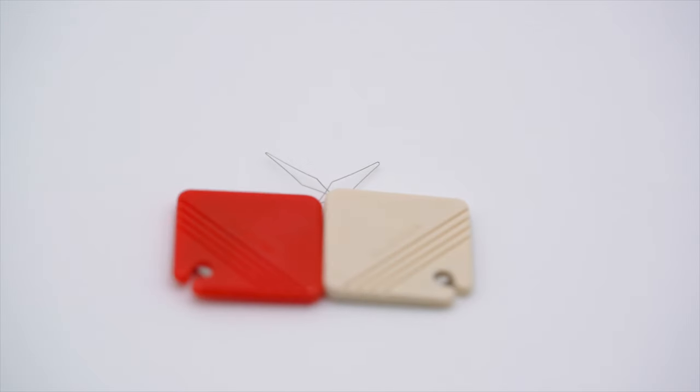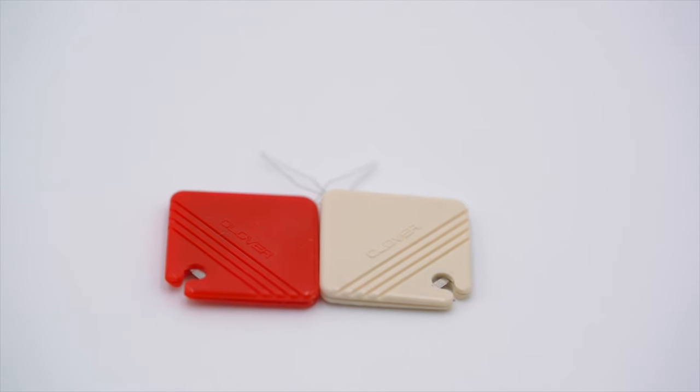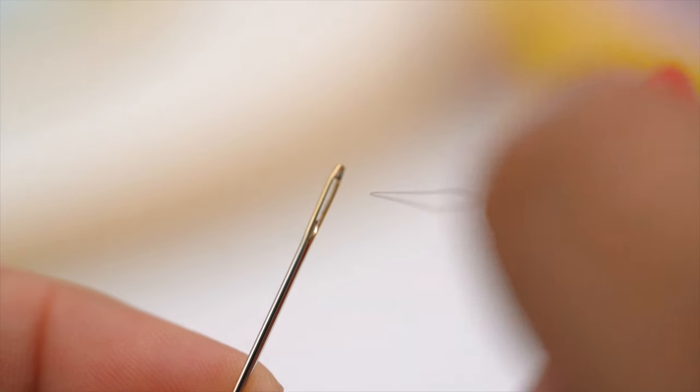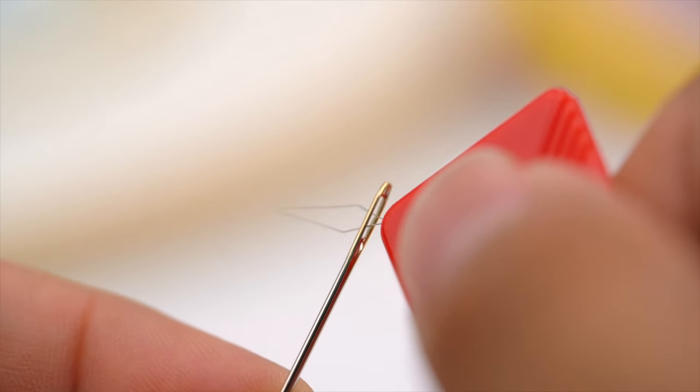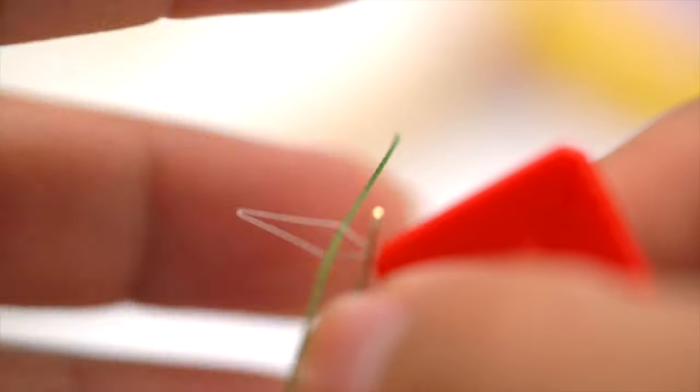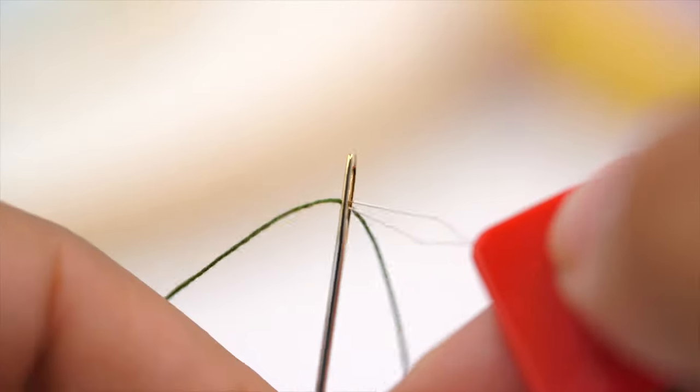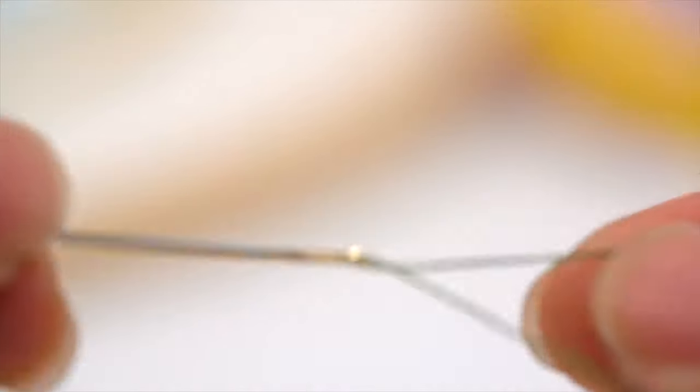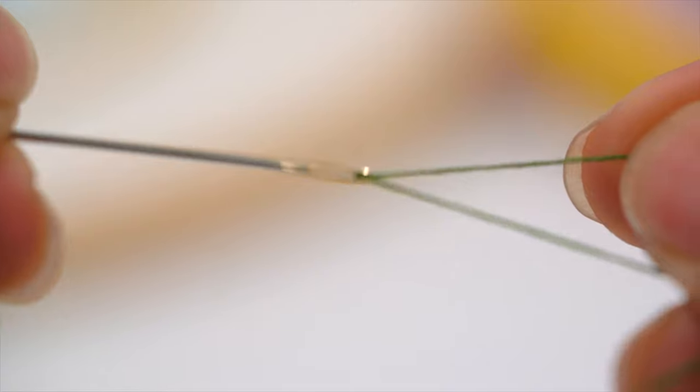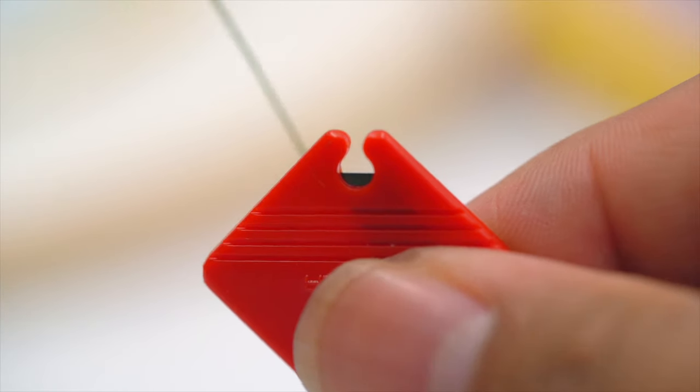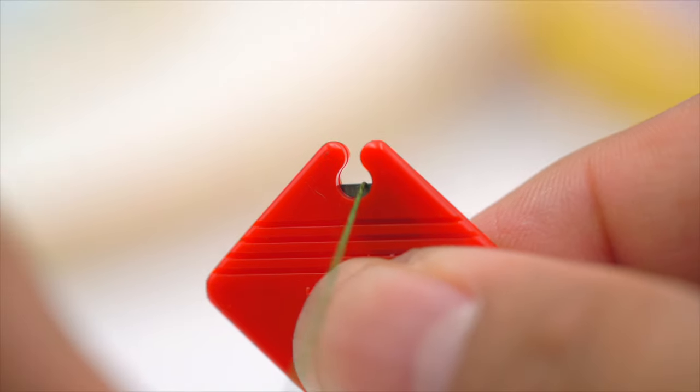The threader with cutter, or Petite Cut, is packaged with two thread cutters. Fine wire loops allow us to thread even the finest eyes. The opposite end of the threader has a convenient cutting device to trim our thread.